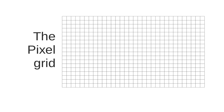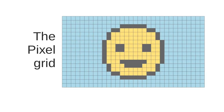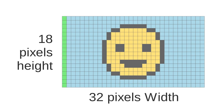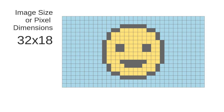This is a grid. There are pixels in the grid — this is a pixel. This is a rectangle shape. This is the height of pixels. This example shows 32 pixels wide and 18 pixels tall, making it a 32x18 resolution.